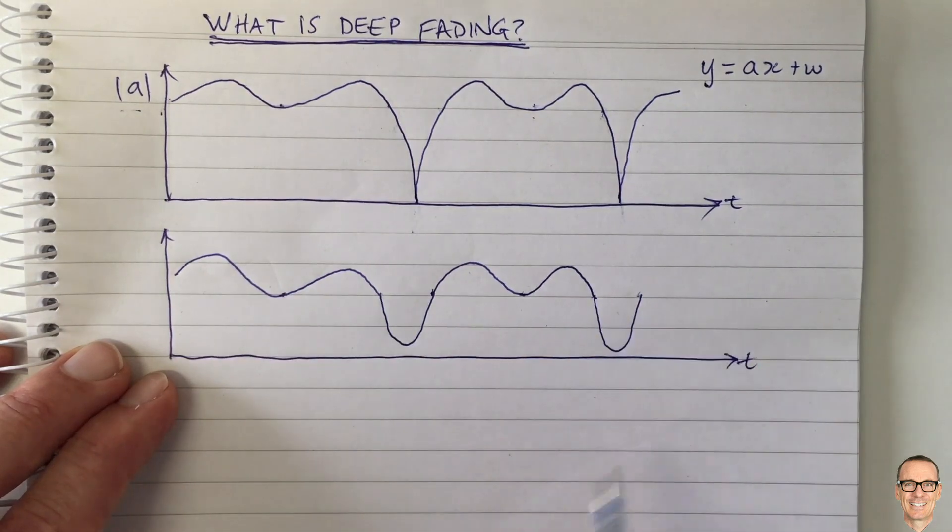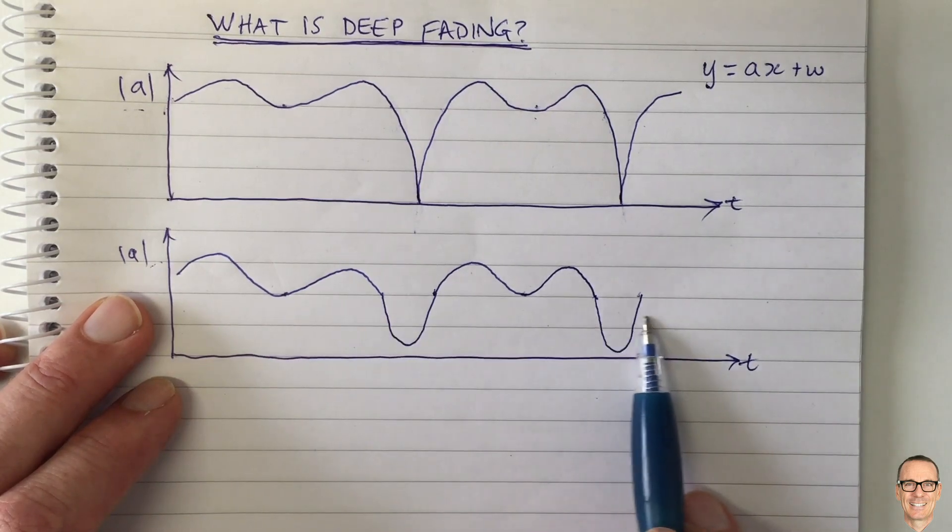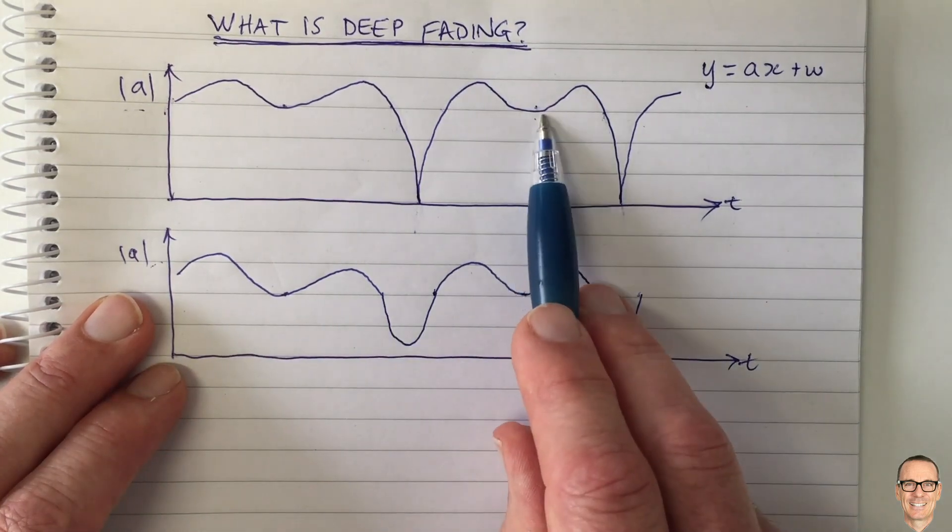So this is the case in the linear. I'm plotting exactly the same thing, exactly the same channel gain. I'm just plotting it on a linear scale instead of a log scale.